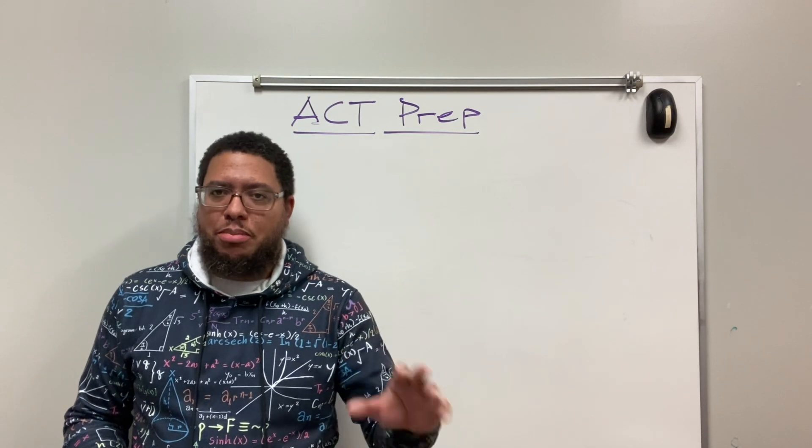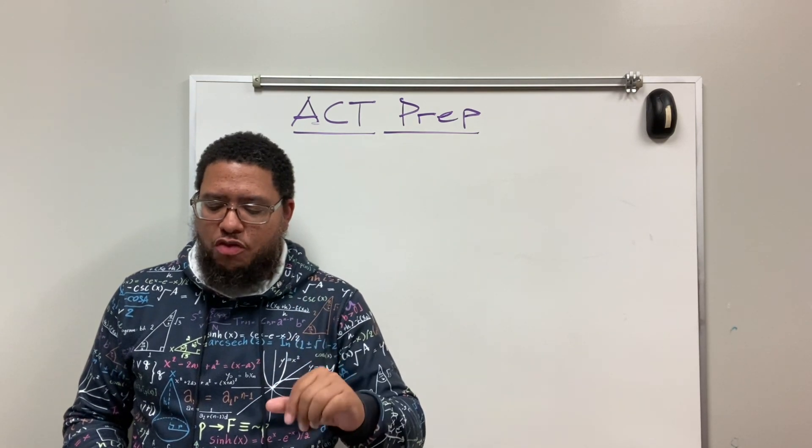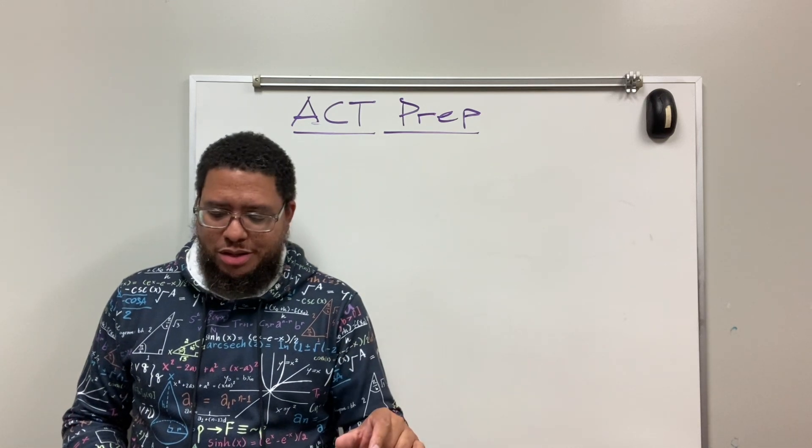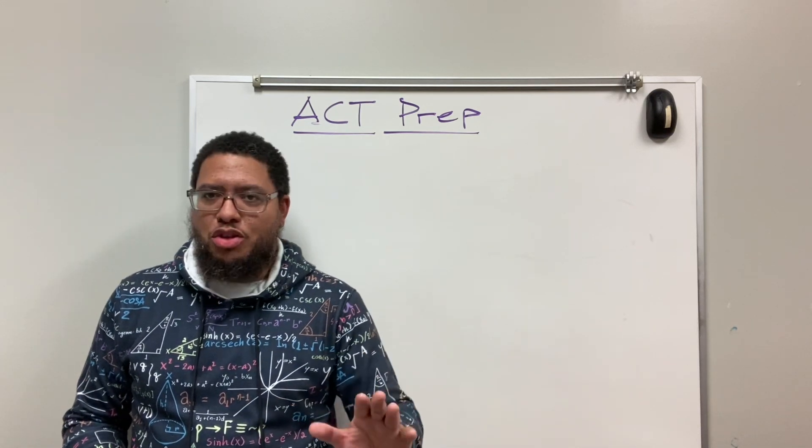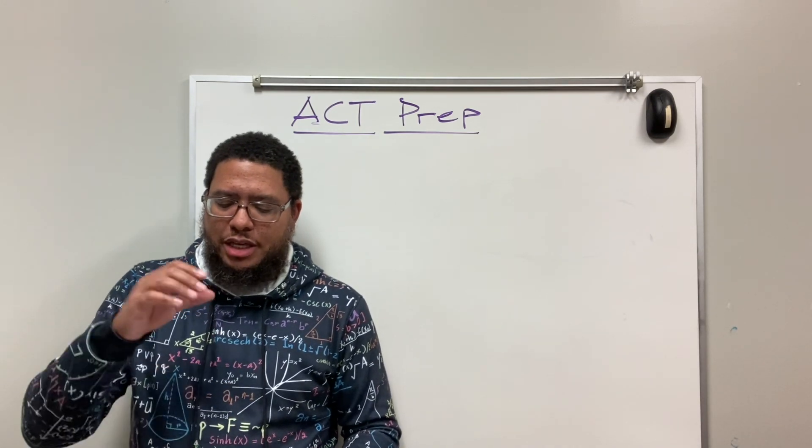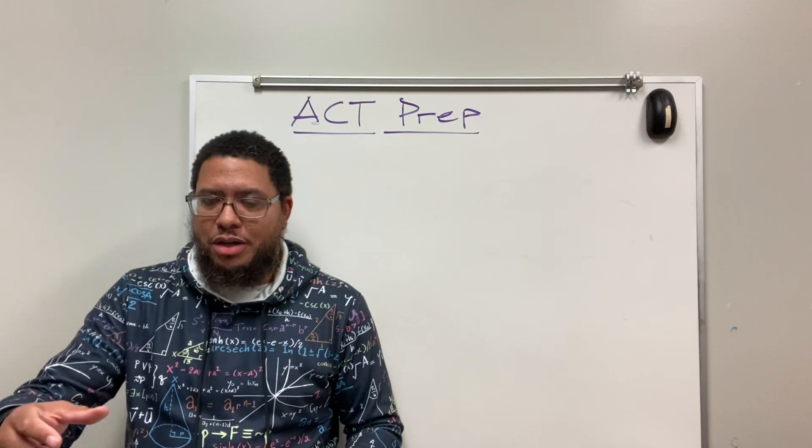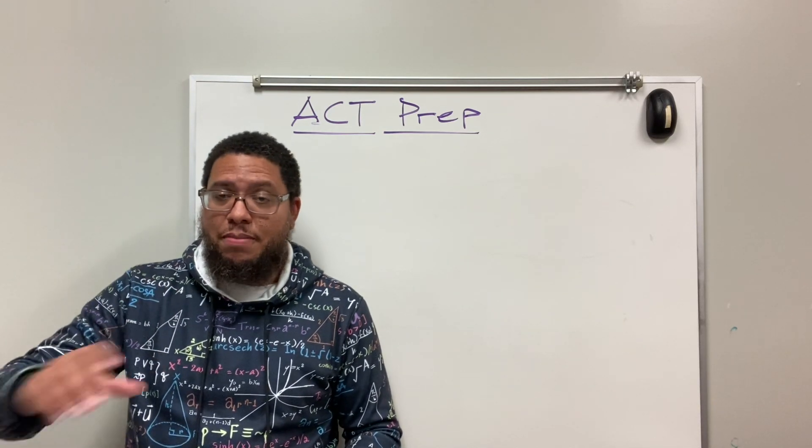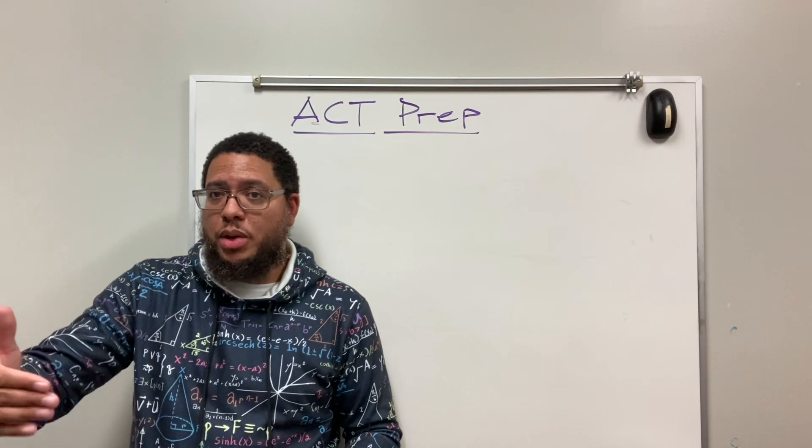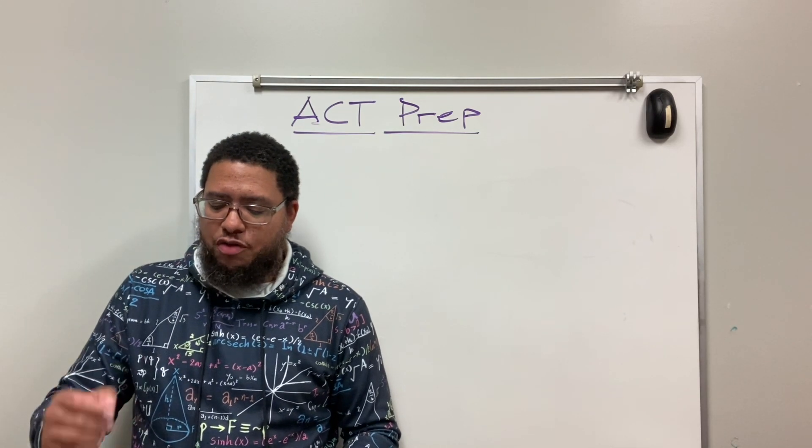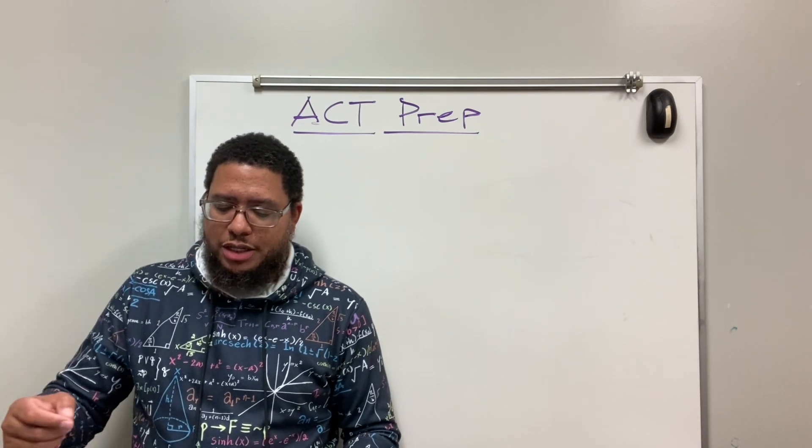This is a proportion problem. But what threw me off was when they said, what is the general formula for the cost? That threw me off. It shouldn't have thrown me off, but it did throw me off. Because if you see a problem where it says, if something is related to something, then how is this related to this? That's a proportion problem. That's a giveaway that it's a proportion problem.